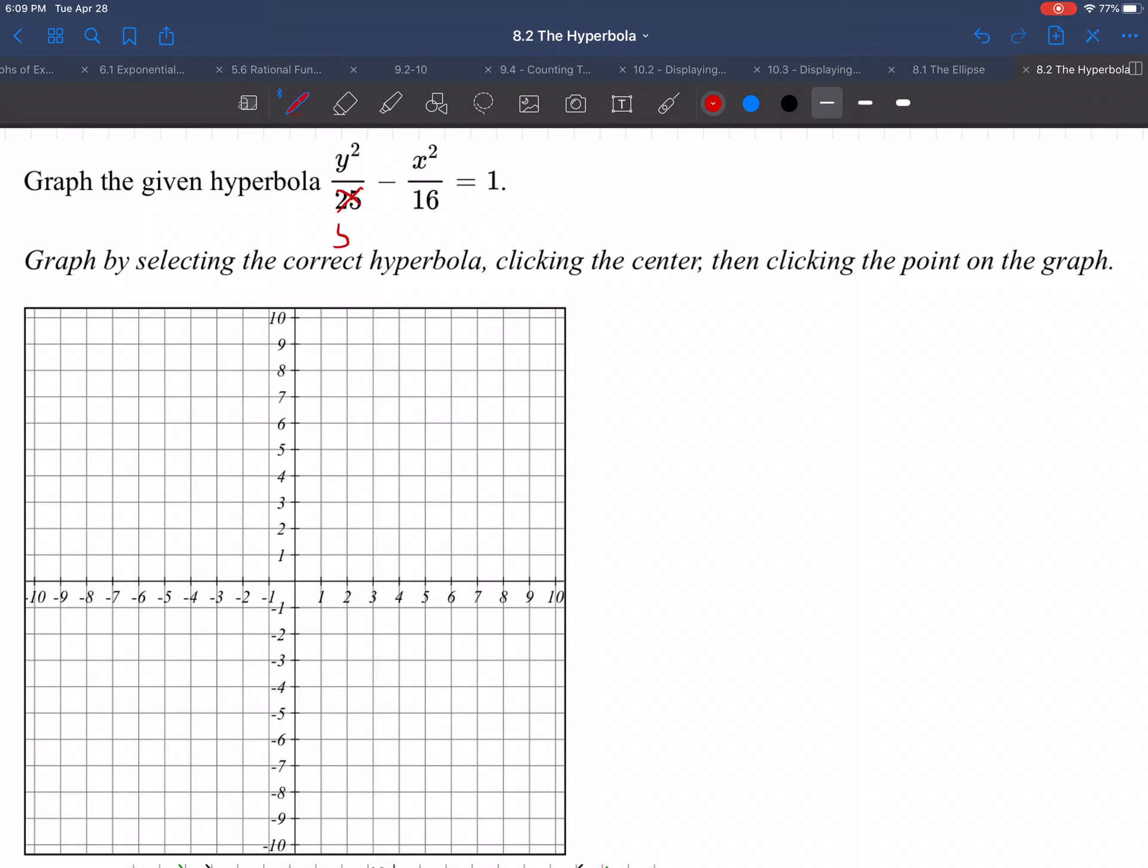Rewrite this 25 as 5 squared, this 16 as 4 squared. Whatever's underneath y is always up-down because y is up-down.